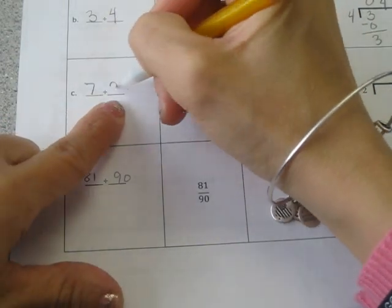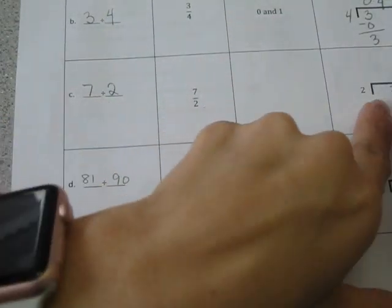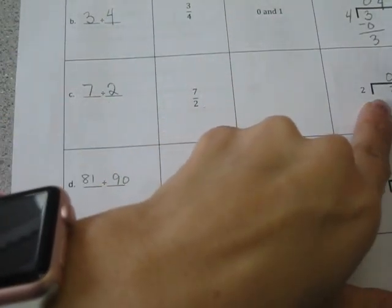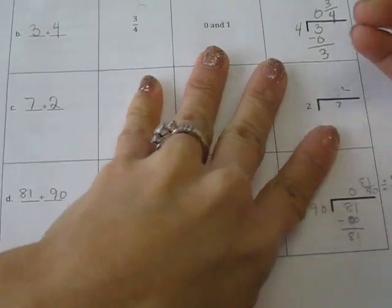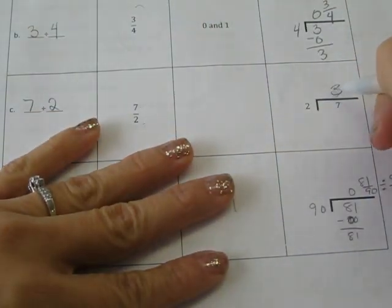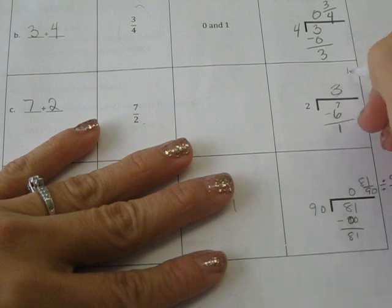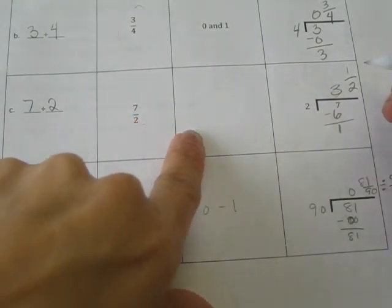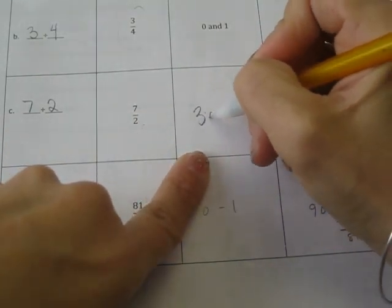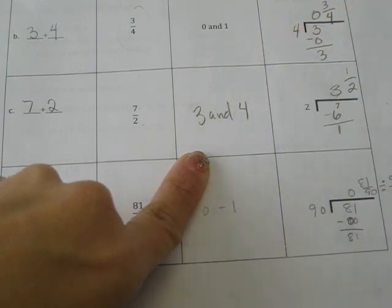My next one is 7 halves, so this is 7 divided by 2. 7 divided by 2 is, oh, no, sorry, not 0. 3. 3 times 2 is 6. Subtract, so that's 3 and 1 half. So that means that this is going to be somewhere between 3 and 4. Okay.